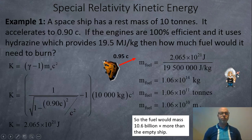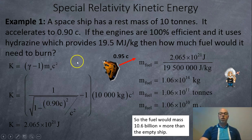Example one: A spaceship has a rest mass of 10 tons. It accelerates to 0.9c. If the engines are 100% efficient and it uses hydrazine, which is rocket fuel, which provides 19.5 megajoules per kilo, then how much fuel would it need to burn?